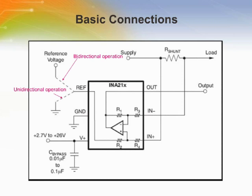Unidirectional operation allows the INA210 to INA214 to measure currents through a resistive shunt in one direction. This can be achieved by setting the output at ground by connecting the REF pin to ground. Bidirectional operation allows the INA210 to INA214 to measure currents in two directions, where the output can be set anywhere within the limits of the reference.